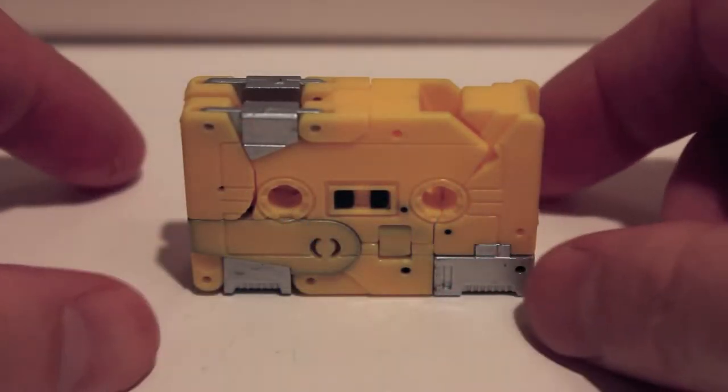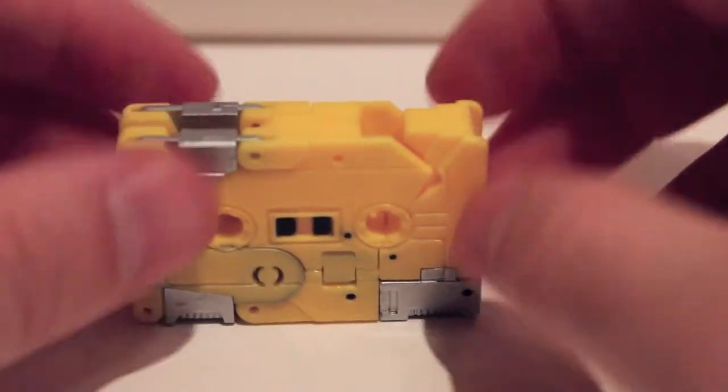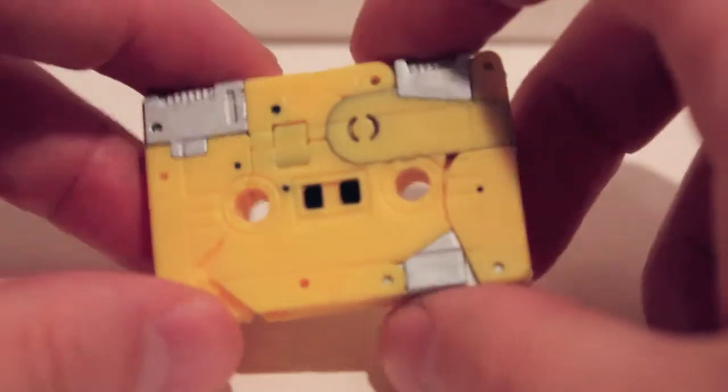Alright guys, got another video review for you. This time we're taking a look at another one of the KFC cassettes. This is their second main release - Iron Paw, also known as Steeljaw, another one of Blackstone's cassettes.